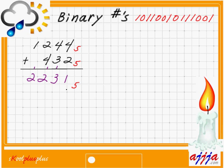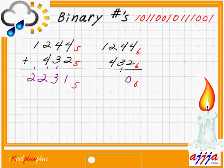This time we treat the exactly same digits — 1 2 4 4 and 4 3 2 — as base number 6. Four plus two is six, so six goes up, nothing left. Four plus three plus one is eight: six goes up, two left. Two plus four plus one is seven: one left, one carry up — that's six. One and one is two. The result is 2 1 2 0 base number 6.